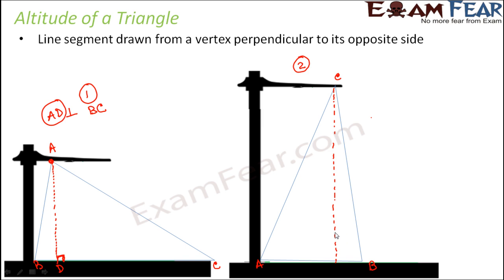Similarly, in this case, we are actually measuring the altitude from vertex C, because this is how the triangle is positioned right now. From vertex C, you draw a perpendicular on the opposite side that is AB. Let's call this D. In this case, CD is perpendicular on AB. Therefore, in this case, CD is the altitude of the triangle.